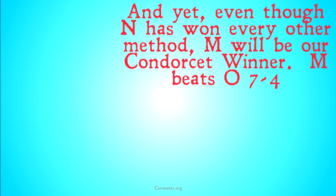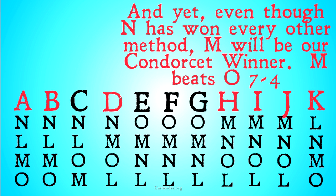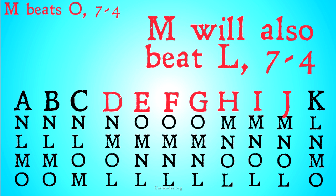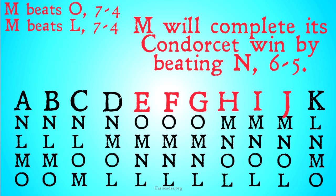Even though N has won every other method, M will be our Condorcet Winner. M beats O seven to four, with A, B, D, H, I, J, and K all ranking M above O. M also beats L seven to four, with D, E, F, G, H, I, and J all ranking M above L. And finally, most importantly, M completes the Condorcet win by beating N barely, six to five, with six voters ranking M over N. M beats every single candidate, including N — the candidate that everyone else picked — one-on-one. And yet, all the other voting systems picked N instead of M.